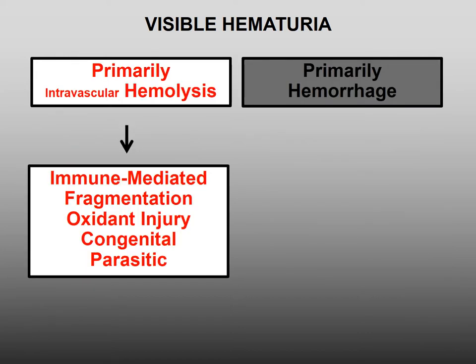Causes for hemolysis include immune-mediated hemolytic anemia; red blood cell fragmentation, which can be seen with splenic hemangiosarcoma and heartworm caval syndrome; oxidation by zinc, onions, and garlic in dogs, and medetomidine and propofol in cats; congenital membrane defects seen in Springer Spaniels and Abyssinian cats; and parasites such as babesiosis and Mycoplasma hemophilis.